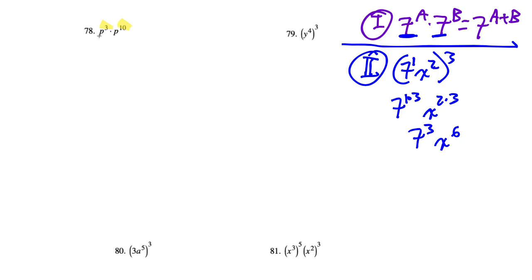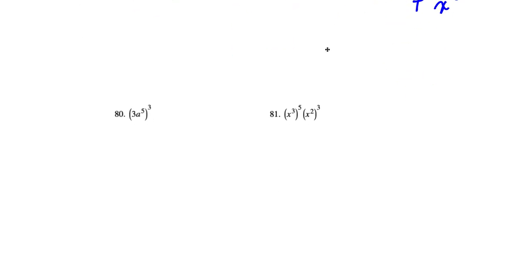So in this case we have like bases, the p's, so we're going to do adding the exponents so it's p to the 3 plus 10, so it's going to be p to the 13th. So in this case in number 79 it's going to be y to the 4th raised to the 3rd, well we're going to multiply these exponents so it's y to the 12th. Oh my gosh I almost forgot to box that answer for 78.